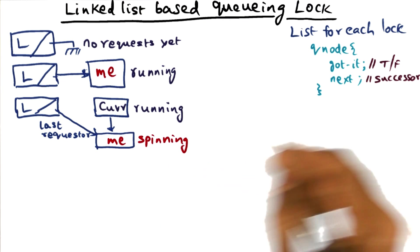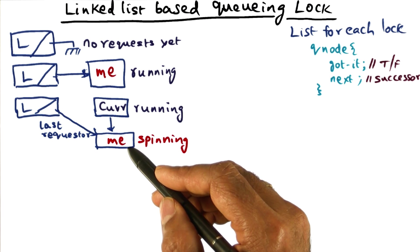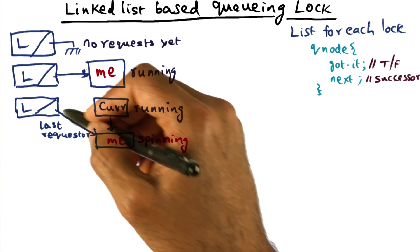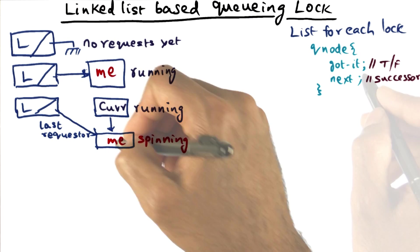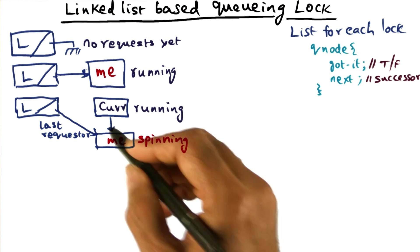So I'll initialize it to false when I came in and formed this request. When I formed this request, what I did was to set myself as the last requester. I'll clear out this field to indicate that I don't have the lock.